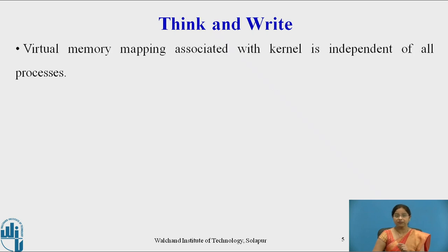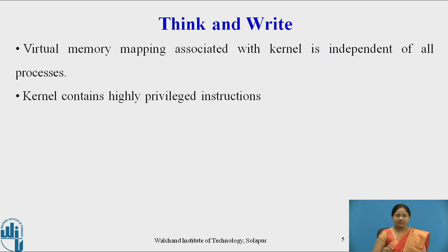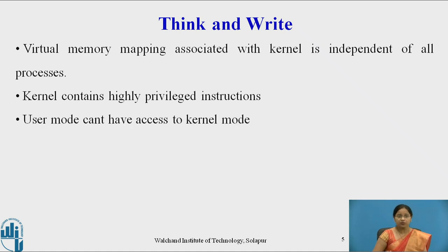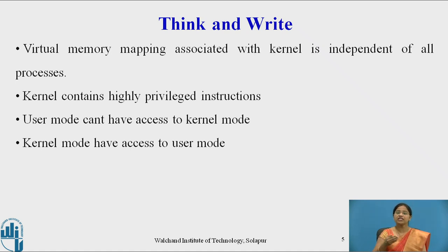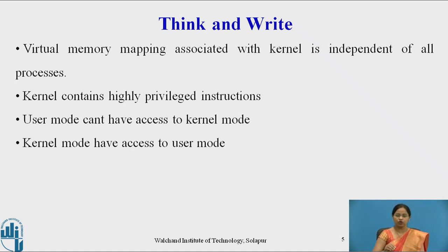The virtual memory mapping associated with the kernel is independent of all the processes executing in the system. The kernel contains highly privileged instructions. User processes cannot have access to kernel mode, but kernel mode can have access to user mode. Since all highly privileged instructions are executed in kernel mode, whenever there is a change from user to kernel, it is necessary to check the kernel virtual addresses for converting virtual addresses into physical addresses.